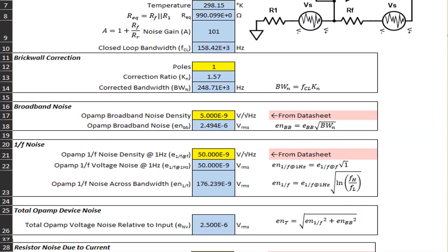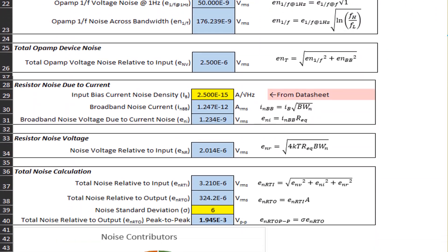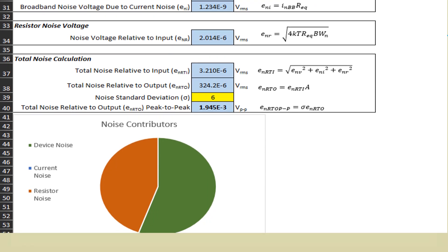I created a spreadsheet to do all these noise calculations. I hope you may find it useful. It has a pie chart that shows the individual contributors of the device noise, the current noise, and the resistor noise.